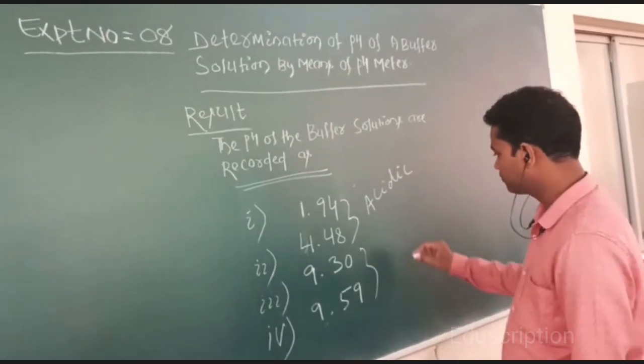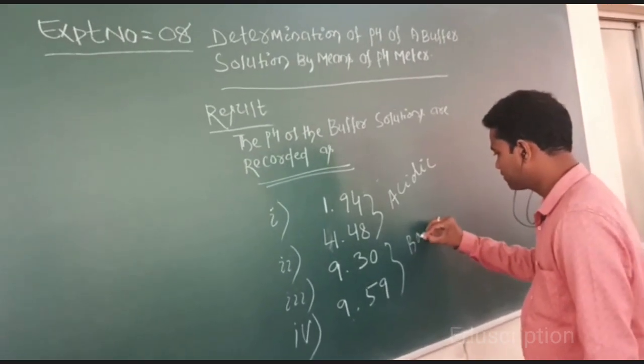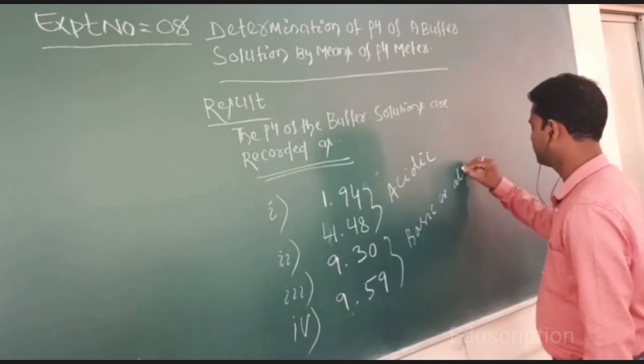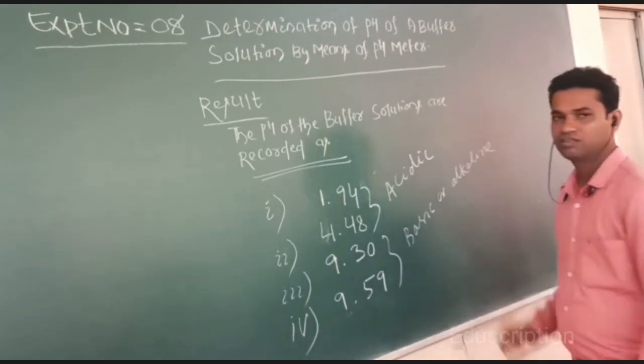Third and fourth beaker are basic or alkaline. Now, all of you note these readings and complete.